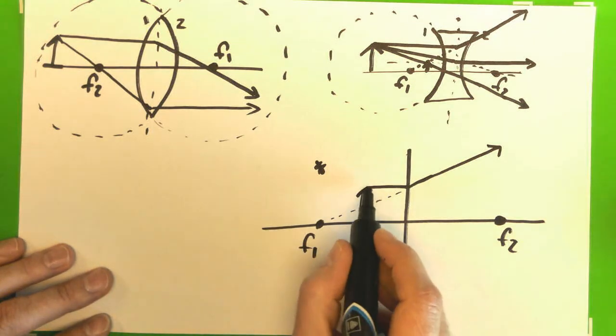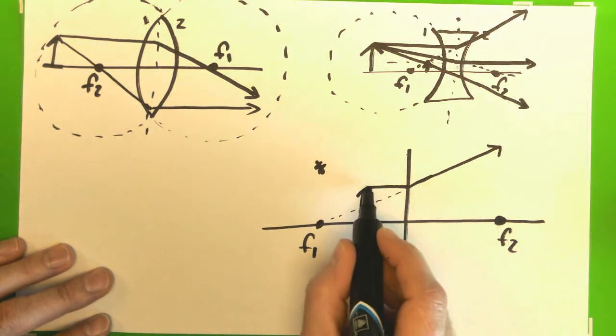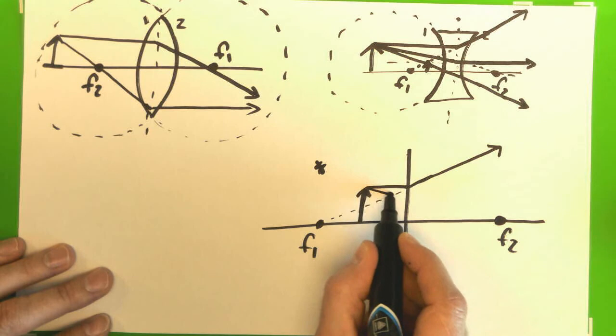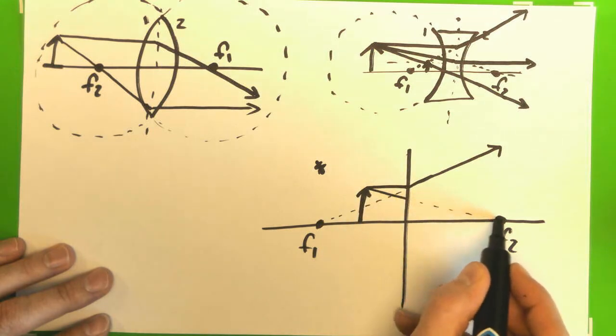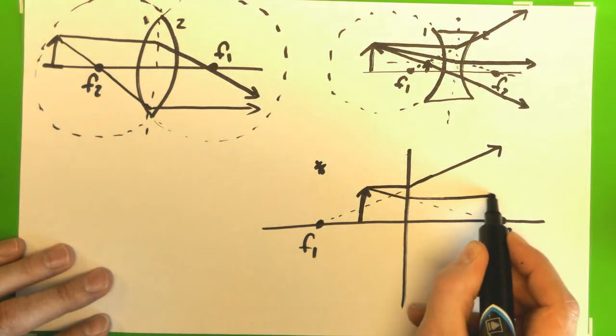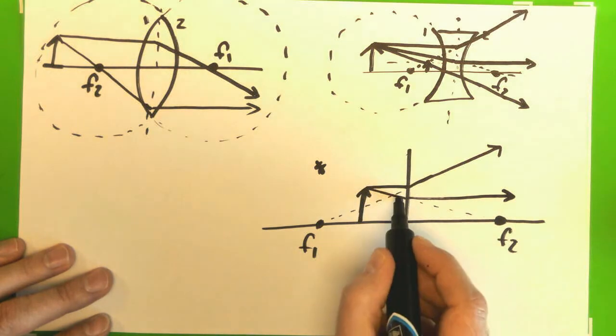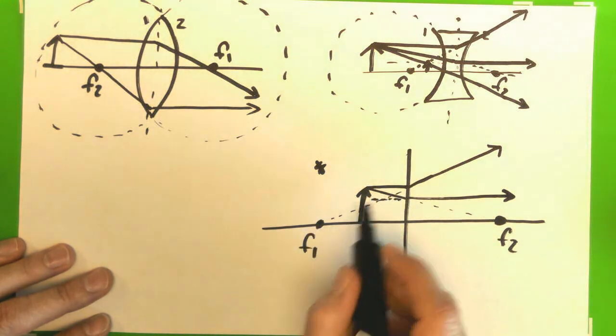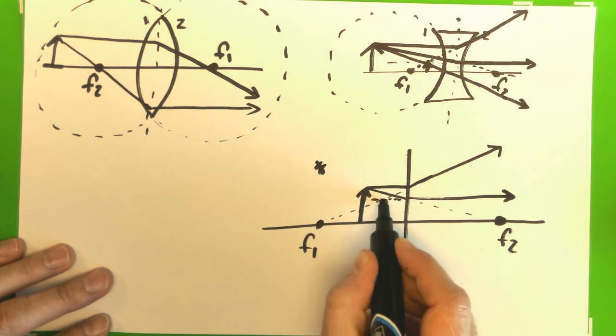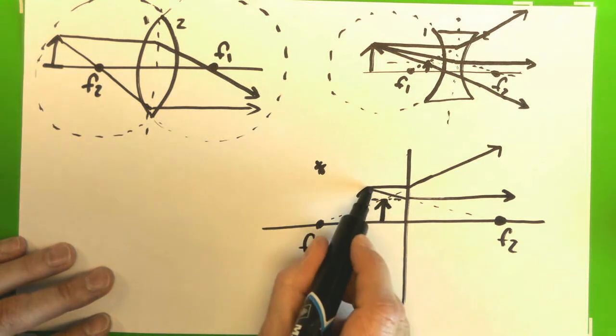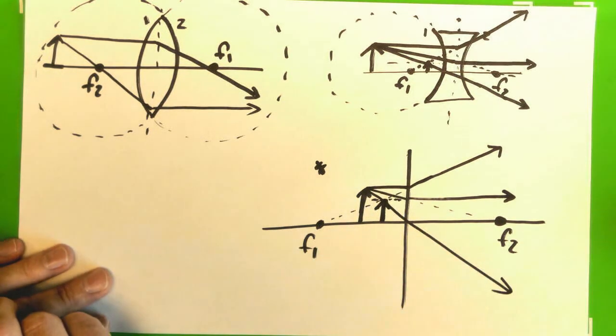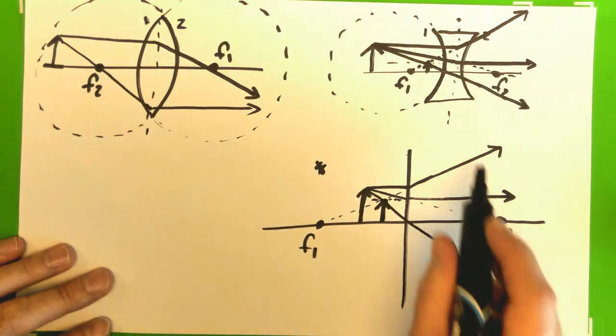The next one is it's going to go towards the second focal point as if it's from there. It's going to come out straight, which makes it about right here is where the image is going to form. And my central ray confirms that. So all three of these rays seem to converge at this point.